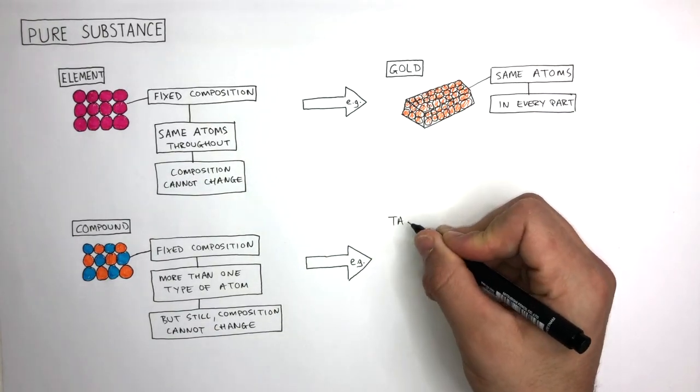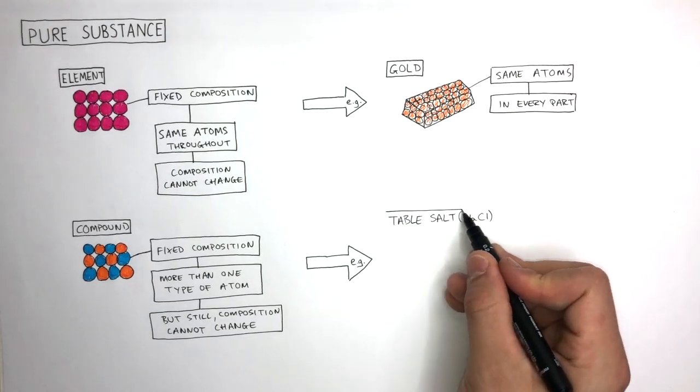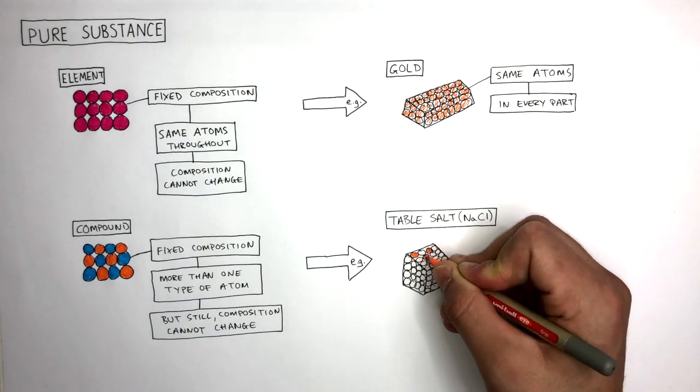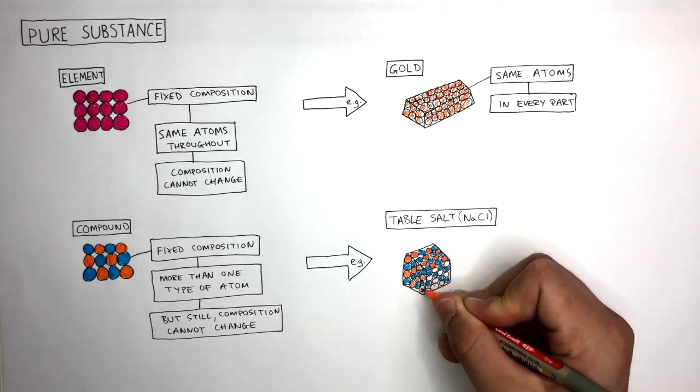Let's use the example of table salt, also known as sodium chloride, to explain why a compound can be a pure substance. This particle diagram represents the sodium and chloride ions ionically bonded together.